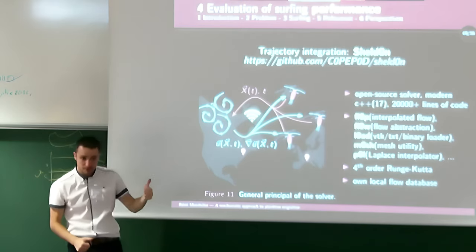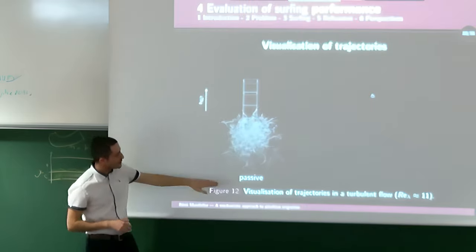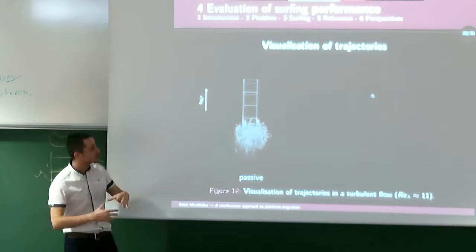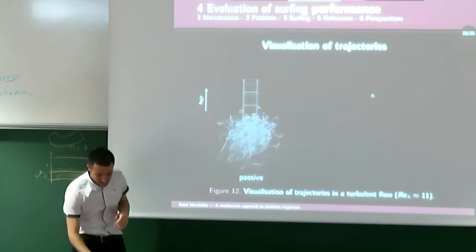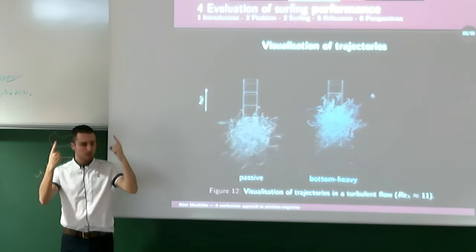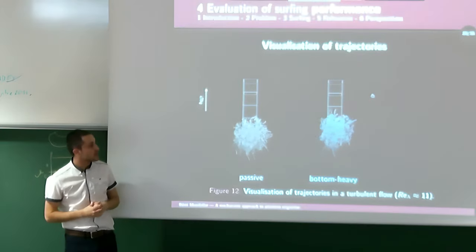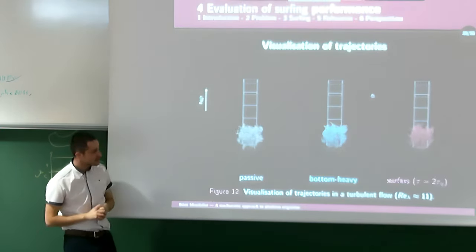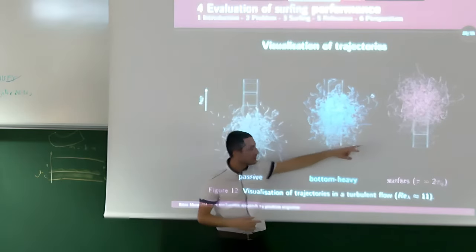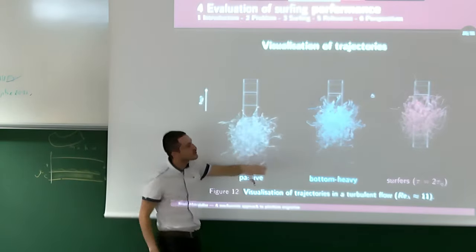We can also use our own local flow database for simulations at different Reynolds numbers. Putting passive particles in the simulation shows the turbulent flow dispersing them isotropically. Adding bottom-heavy particles — swimmers always swimming upward — shows the same dispersive effect plus an upward drift due to active swimming. Adding surfers shows the same dispersive effect from turbulence, but the upward drift is greater than for bottom-heavy swimmers at the same swimming velocity.